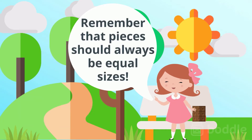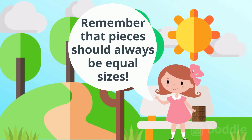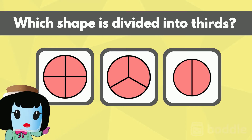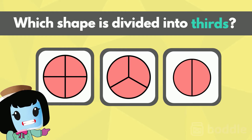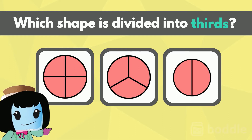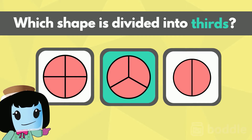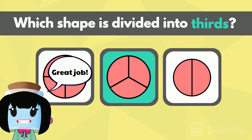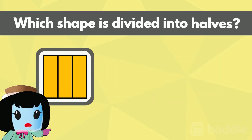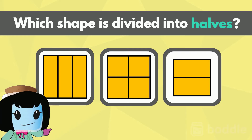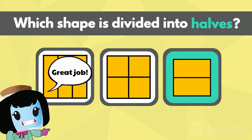Remember that pieces should always be equal sizes. Let's look at these shapes. Which one is correctly divided into thirds? Did you say this one? Great job. Which of these shapes is correctly divided into halves? Great job again.